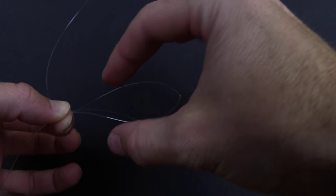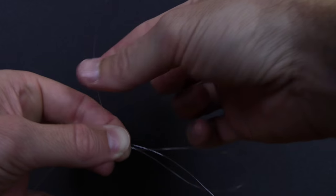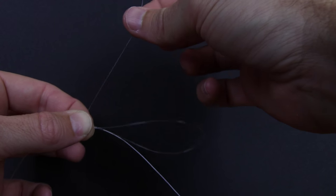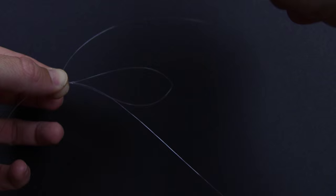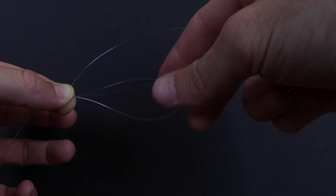We have the leader loop sticking out here, we have our main line tag sticking straight up. With our tag end we're going to wrap around this loop plus the main line ten times, all going back in this direction towards the end of this loop.